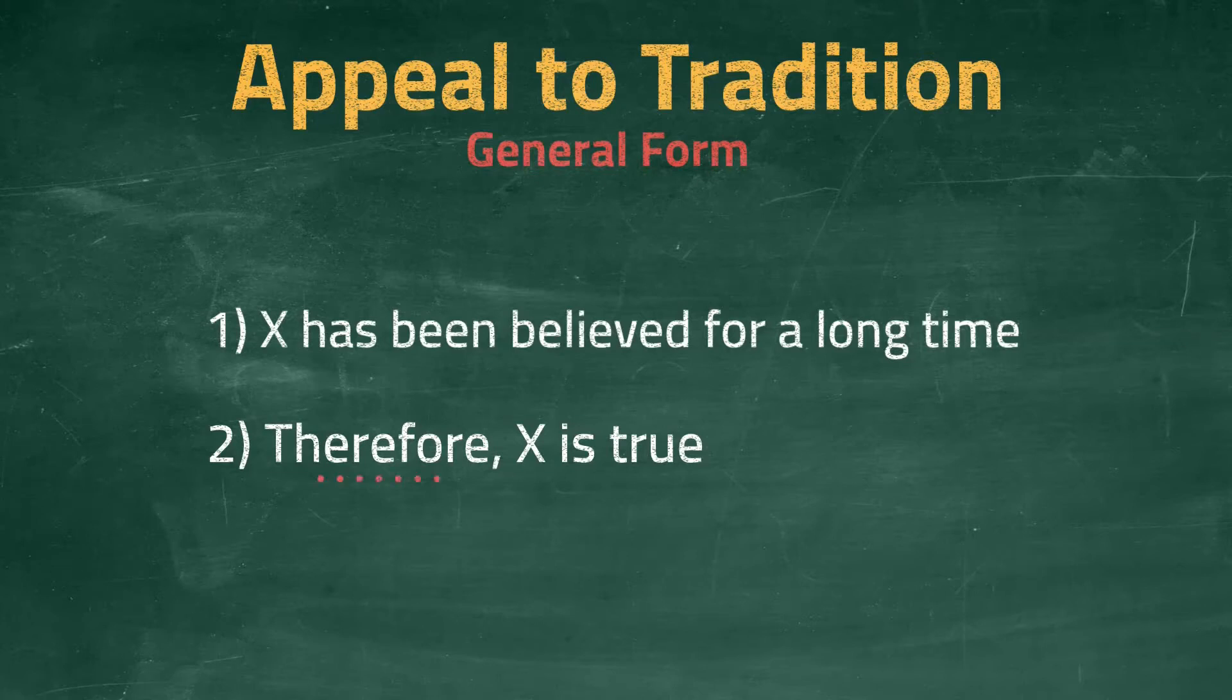The conclusion here is fallacious, as the argument presented says nothing about the truth value of X. The fact that people have believed or done it for a long time does not make it true. This kind of argument plays on the idea that people would not do the wrong thing or believe something false repeatedly for so long. But people do make mistakes, and some mistakes continue to be made.